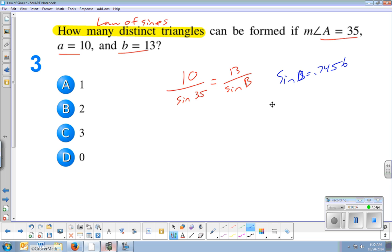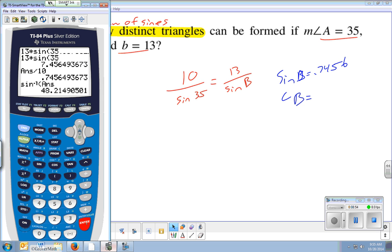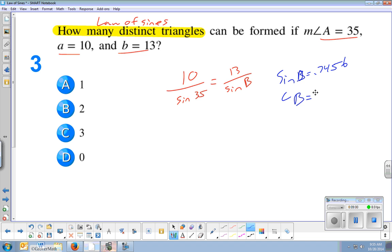But the way to get angle B then is to do the inverse function. So you type in second sine, second answer. Second sine and second answer is our shortcut, instead of retyping that decimal out. Second sine, second answer gives us 48.2. Let's just round it to a whole number to make it simple, let's say 48. All right. So what does this have to do with how many triangles there are?